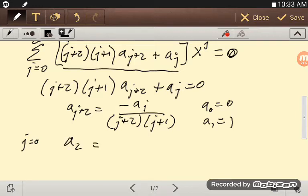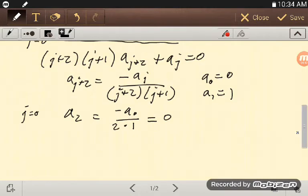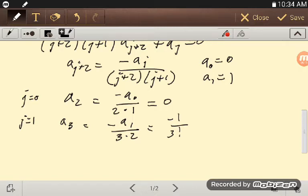If j equals 0, we have then a 2 is minus a 0 over 2 times 1, but that's just 0, because a 0 is 0. So then j equals 1, we have that a 3 is equal to minus a 1 over 3 times 2, which is minus 1 over 3 factorial. Now, I'm doing 3 factorial because I know that the answer is going to be sine, so I'd rather use this as 3 factorial because I should get factorials in the rest of the stuff. So j equals 2, a 4 is equal to minus a 2, but a 2 was 0, and then 4 times 3, so I get 0.